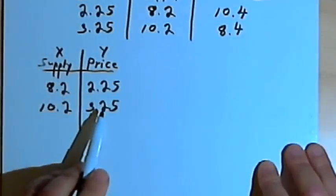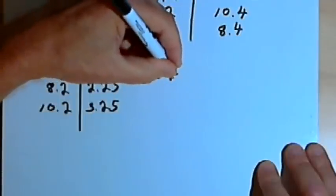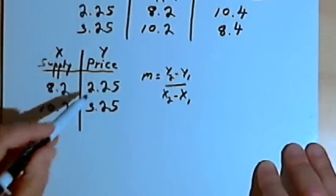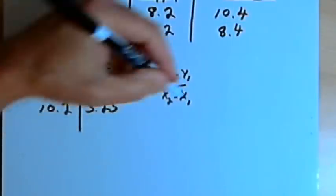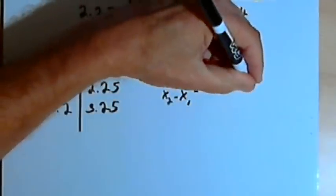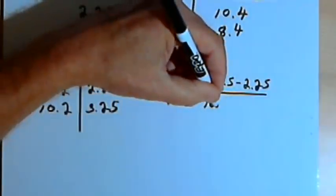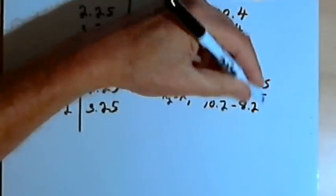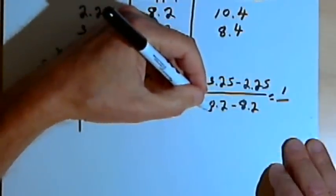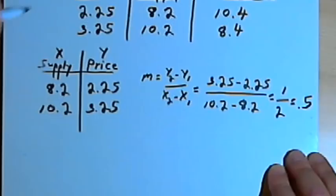We want to use this information to make a linear equation, so I'm going to find the slope first using the slope formula: m equals y-sub-2 minus y-sub-1 over x-sub-2 minus x-sub-1. That gives us 3.25 minus 2.25 over 10.2 minus 8.2. That's 1 over 2, so the slope is one-half, or 0.5 as a decimal.